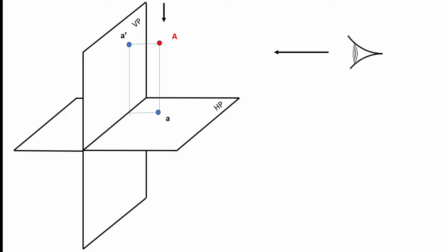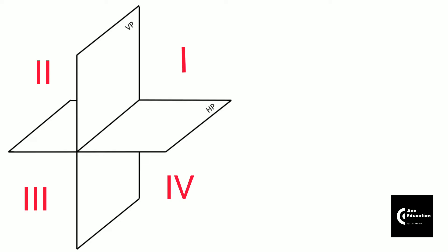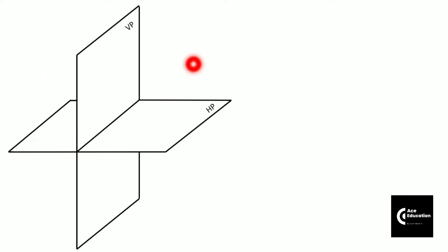We will cover projection of a point first. These are two mutually perpendicular planes — one is the vertical plane and the second one is the horizontal plane. These two mutually perpendicular planes are divided into four different quadrants: first, second, third, and fourth. In today's lecture we are going to cover the problems involved in the first quadrant itself.